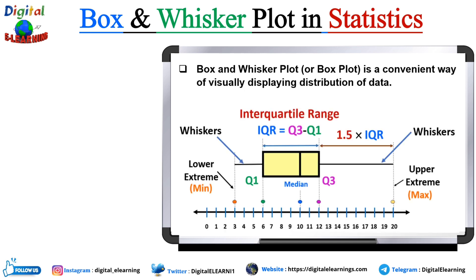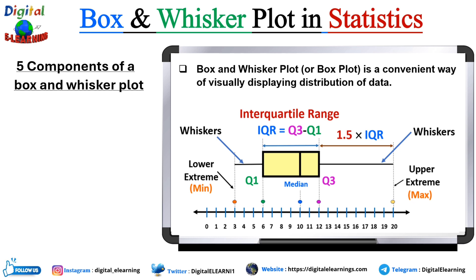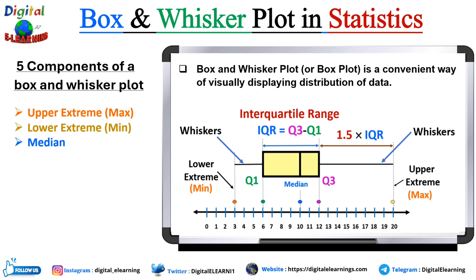The five components of a box and whisker plot are: the upper extreme, or the max value, which is the maximum value from any given data set; and the lower extreme, or the min value, which is the minimum value from any given data set.